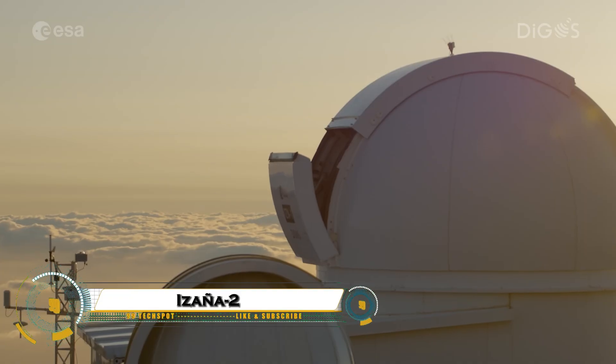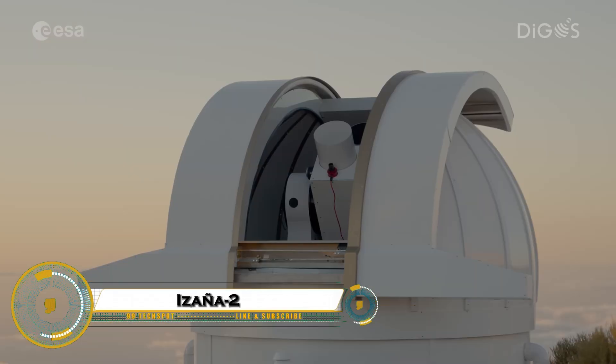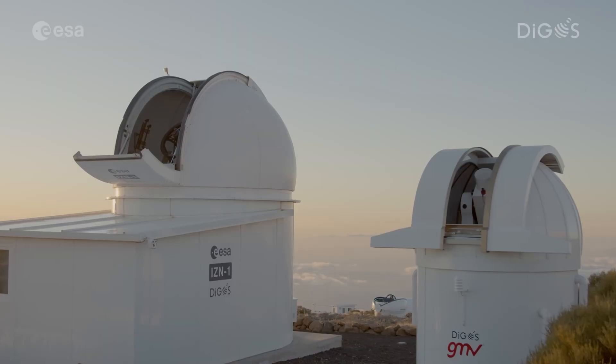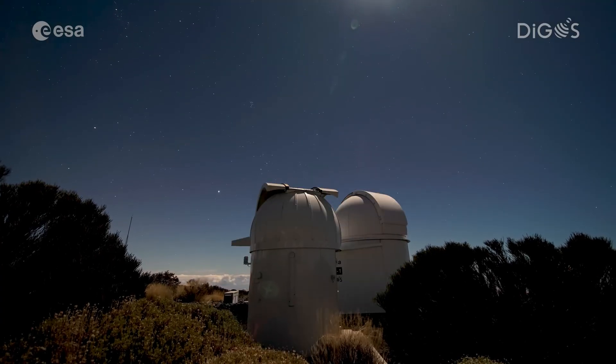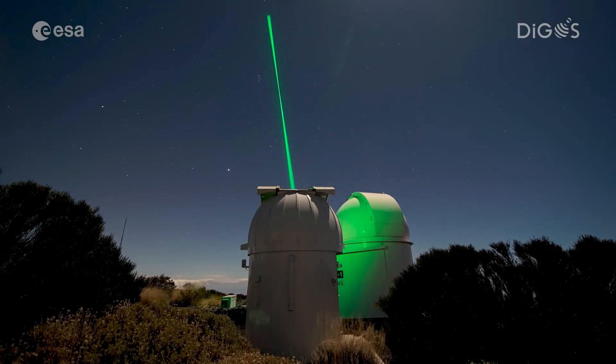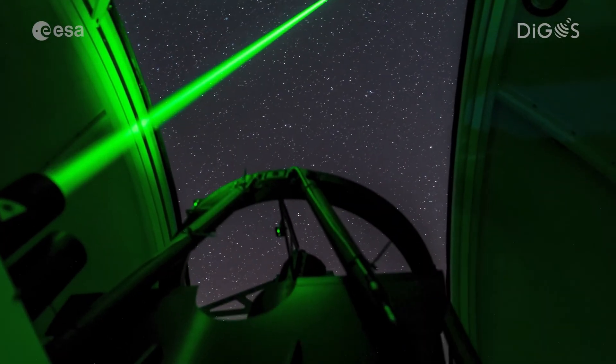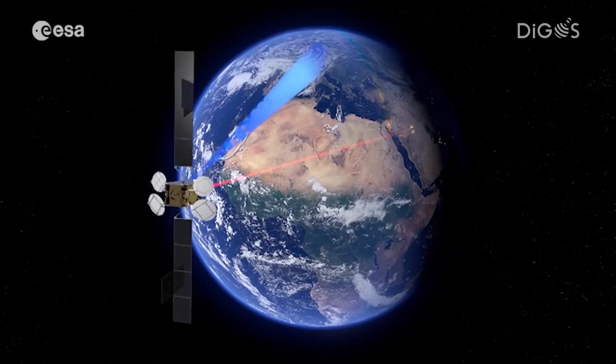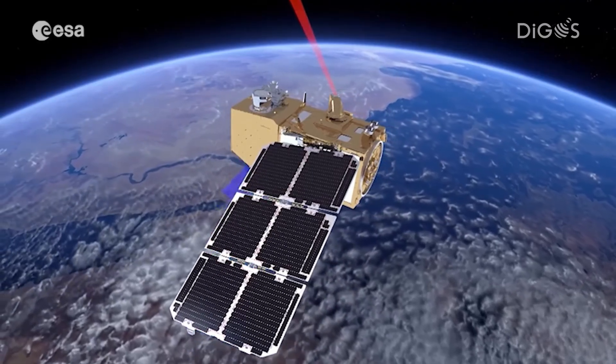Isania 2 is an advanced laser ranging station in Tenerife, Spain, recently finalized by German company Digos for the European Space Agency. Working with partner station Isania 1, it tracks space debris and satellites with unprecedented precision.